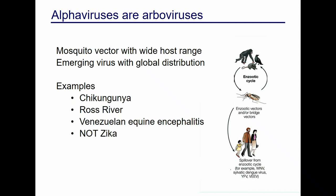Some examples of alphaviruses are chikungunya, Ross River — which is the model system our lab uses — and Venezuelan equine encephalitis. Zika is not an alphavirus; just because everyone thinks mosquito equals Zika, we're not all the same.